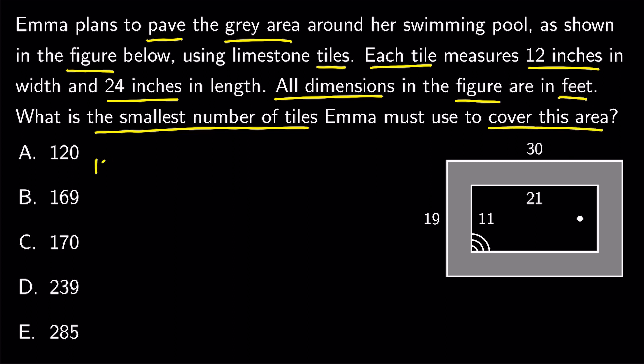Well, each tile measures 12 by 24 inches. Since all dimensions in the figure are in feet, we transform inches to feet to get one foot by two feet. As a result, the area of each tile equals two square feet.